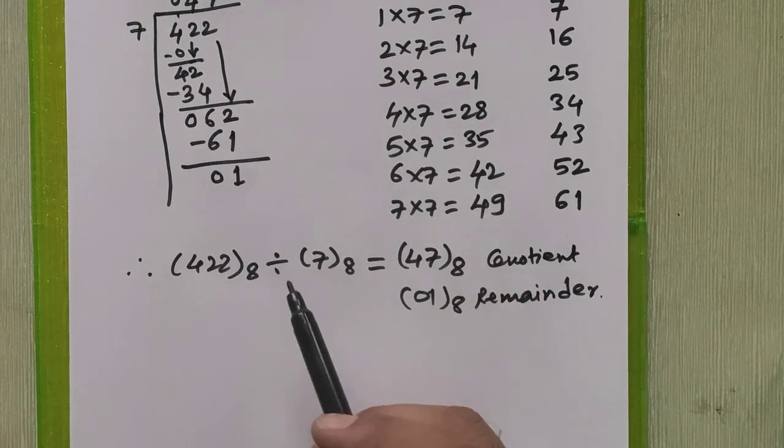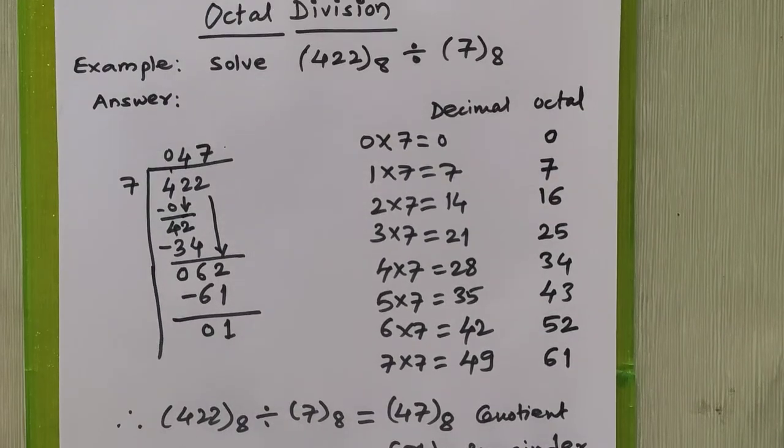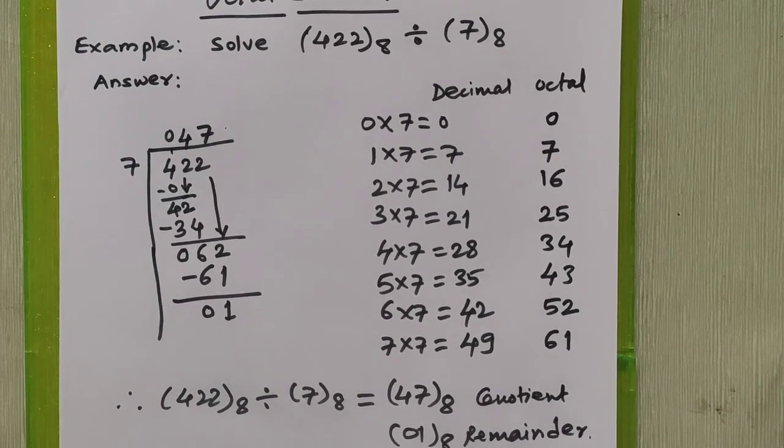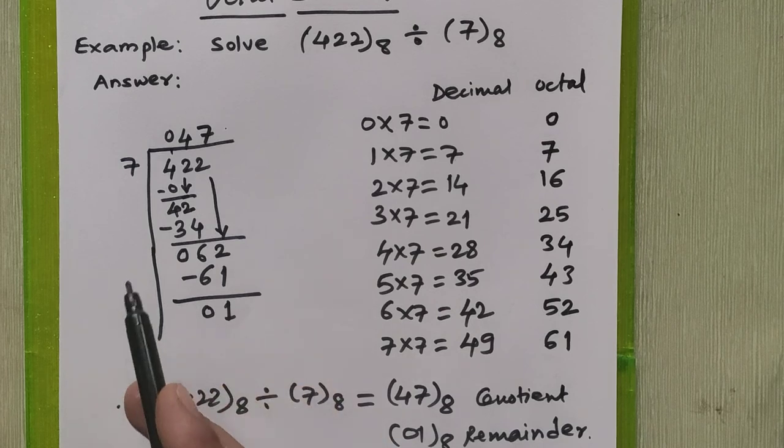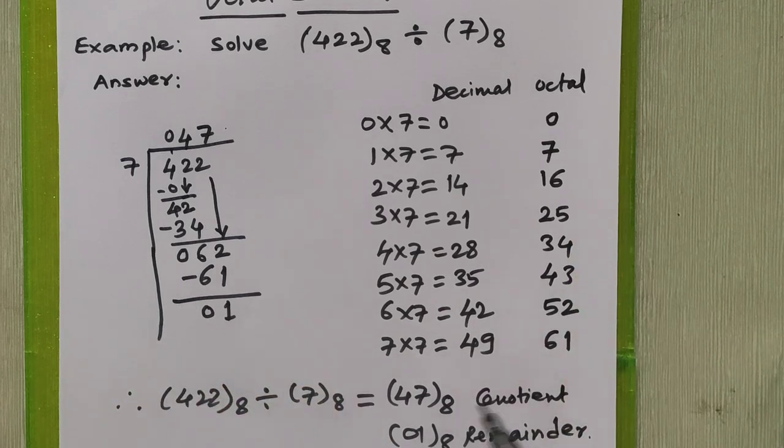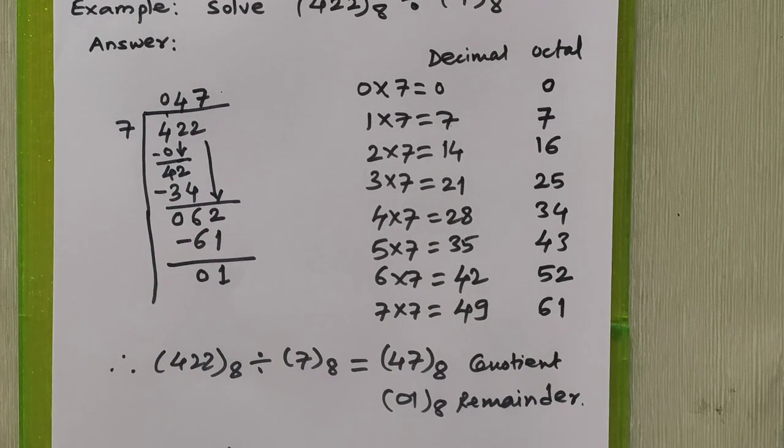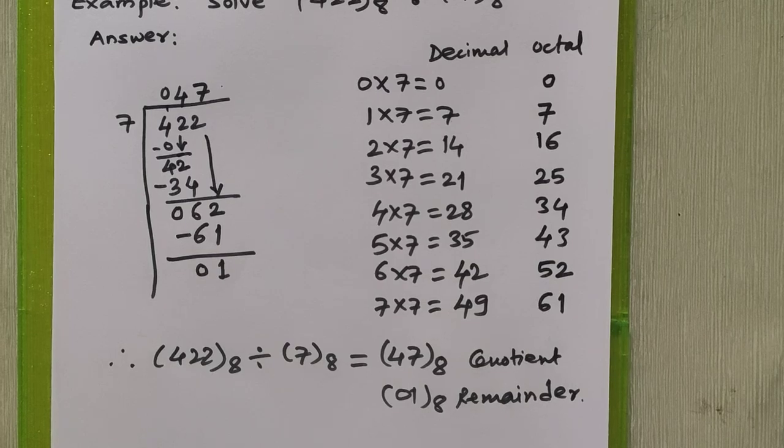This way we can perform direct octal division. Okay, so whenever any division comes, we have to generate a table for it. After generating the table, we can perform the division the same way we perform division in decimals.